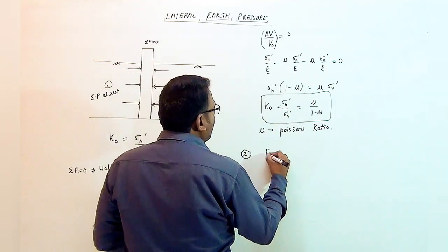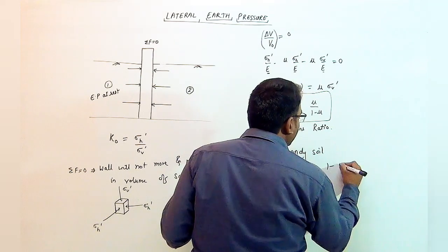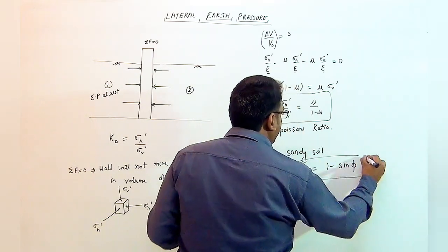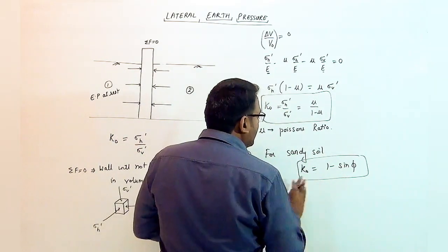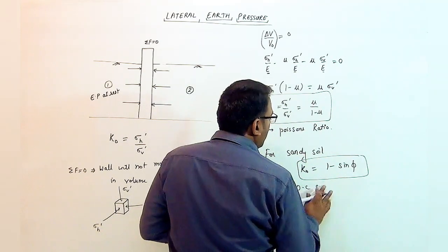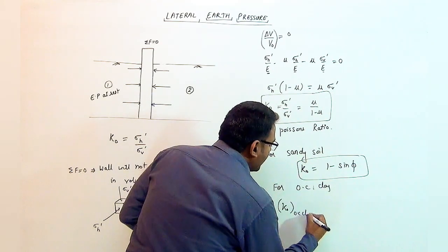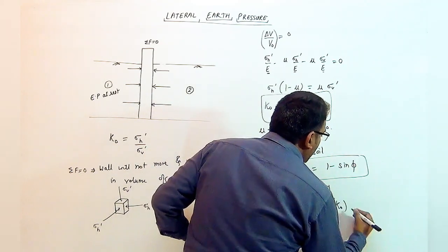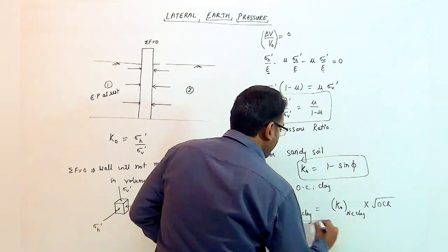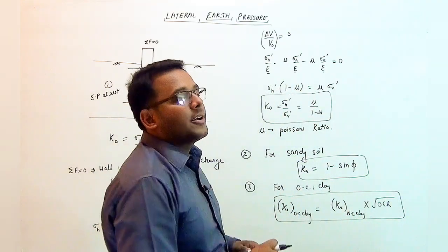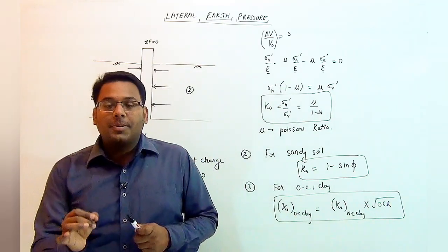The second formula for k0 for sandy soil is given as 1 minus sin phi, where phi is the angle of internal friction. Similarly, there is another formula for OC soil or OC clay: k0 for OC clay is given as k0 of NC clay multiplied by the square root of OCR. These are the different formulas for the value of k0, which is the coefficient of earth pressure at rest.